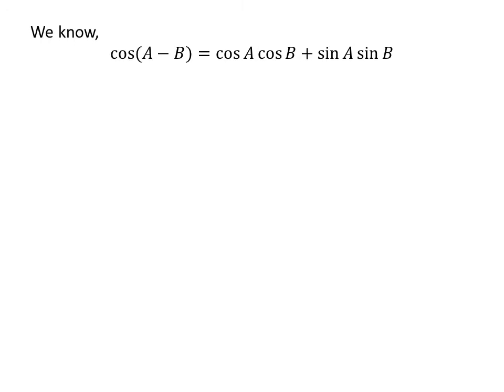As we know, the trigonometry identity cosine of a minus b is equal to cosine of a times cosine of b plus sine of a times sine of b.